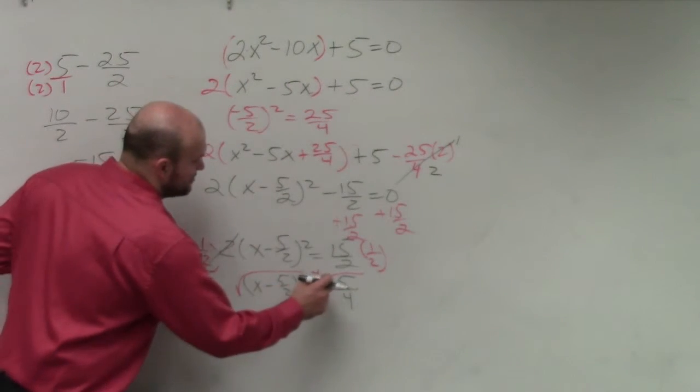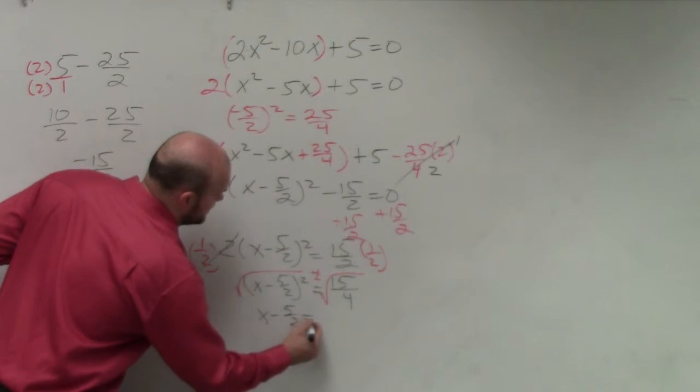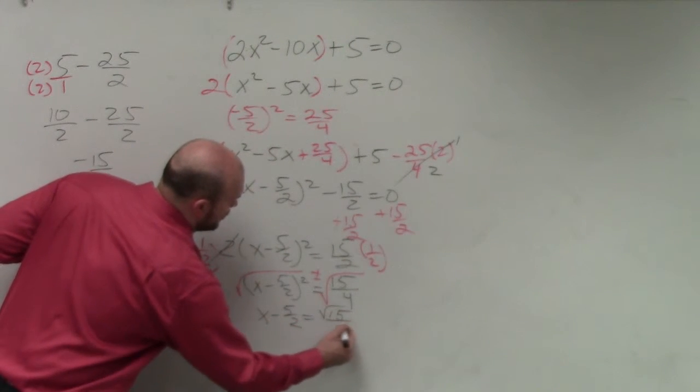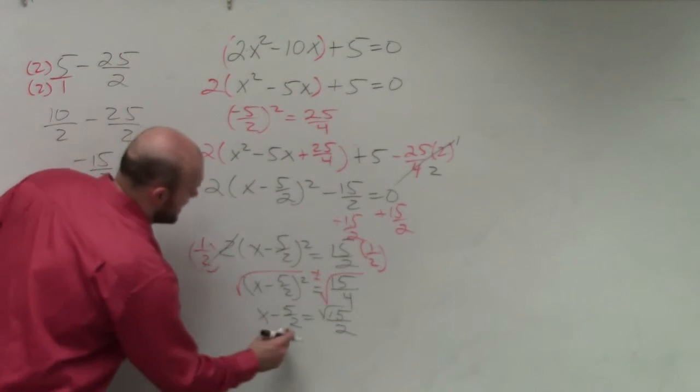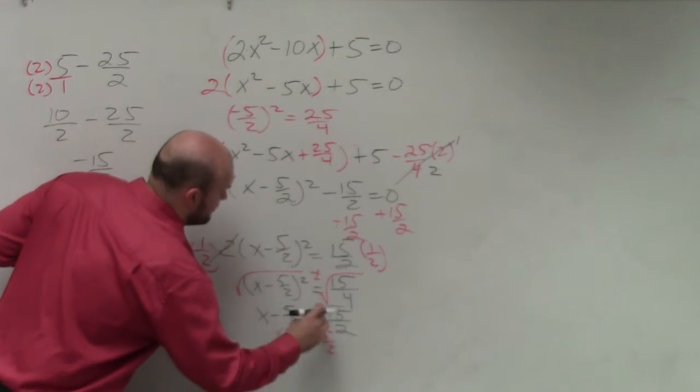Remember, it's also plus or minus. So I have x minus 5 halves equals square root of 15 over 2. And then I just add the 5 halves. Remember, that's plus or minus.